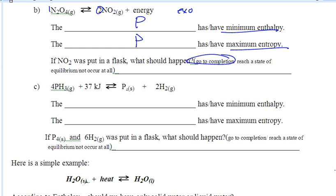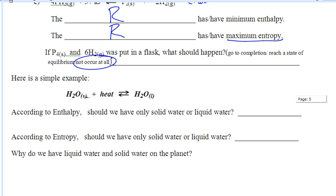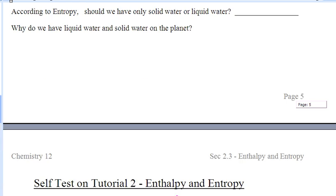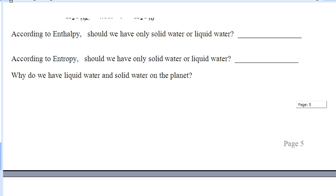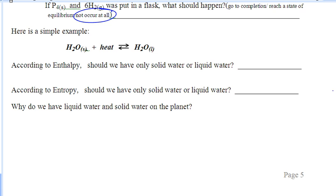In my third example, it's endo, so the reactants have minimum enthalpy. In regards to randomness, a gas is way more random than a solid, so the reactants are more random — which means this will not occur at all. This is where we're going to stop. We're going to do this last example together, and then there's a self-test to follow, which is what we're going to do in class. See everybody tomorrow.